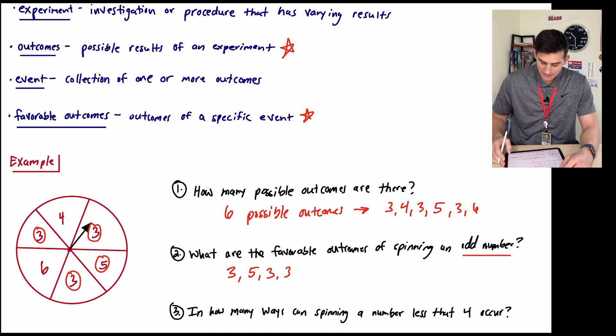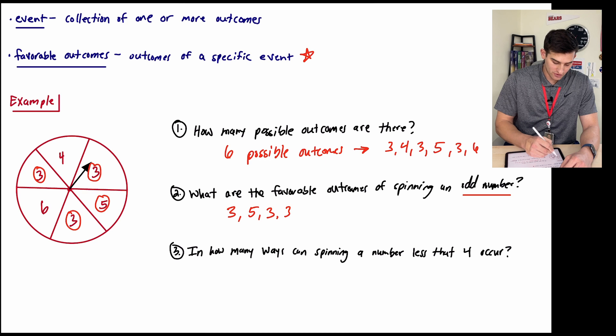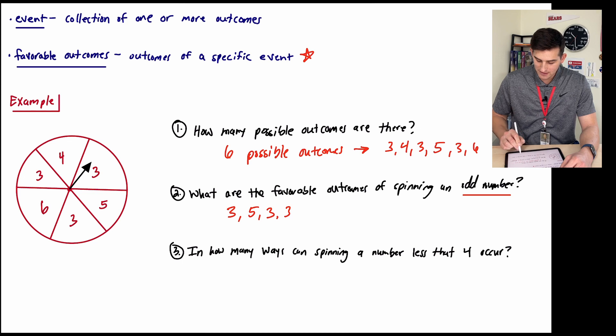And lastly, it says, in how many ways can spinning a number less than four occur? So let's take away our circles here from our odd numbers. And now it says, in how many ways can spinning a number less than four occur?